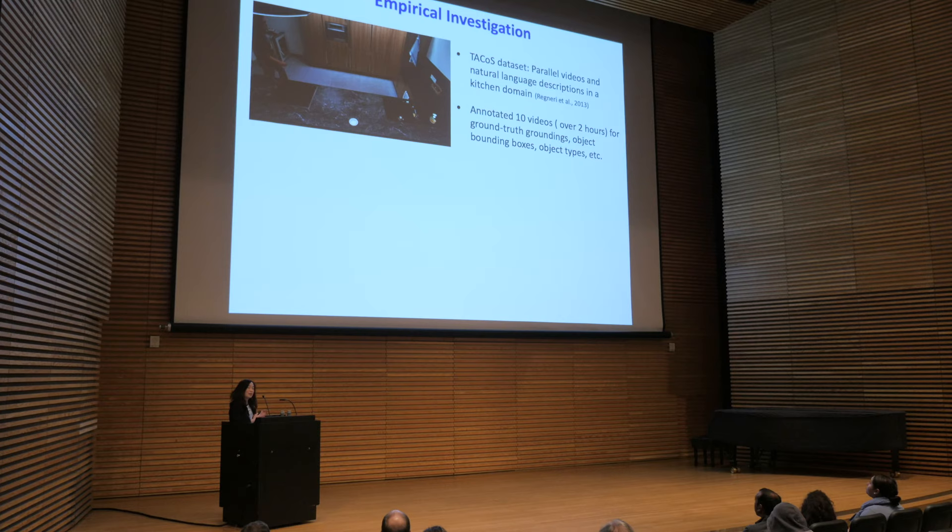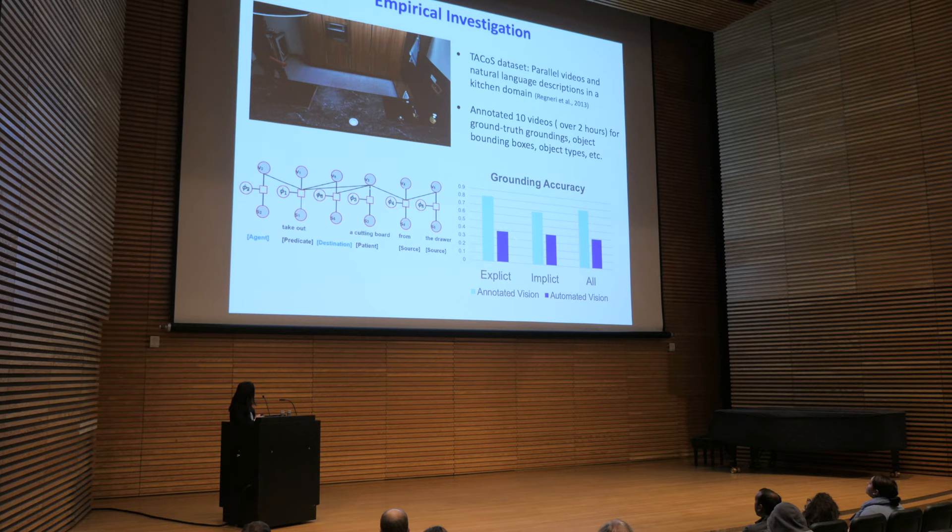My former student Xiaohua and colleagues worked on this problem. We looked at existing datasets and extended some graph models. What I'd really like to highlight is: if we use annotated vision, we can get pretty decent performance. However, when we use automated vision, performance really falls apart. This suggests that computer vision, despite recent advances, still faces many challenges, especially in unconstrained environments. So this raises the question: what can we do on the language side to help with this kind of grounding?